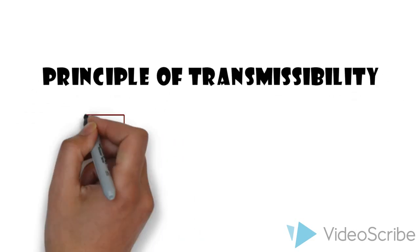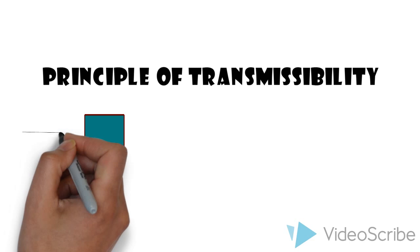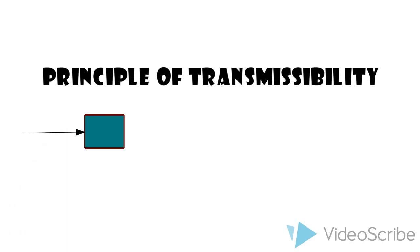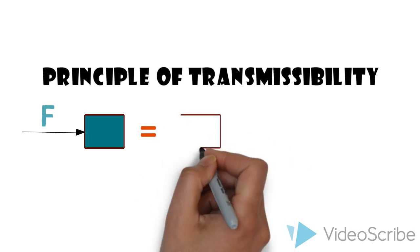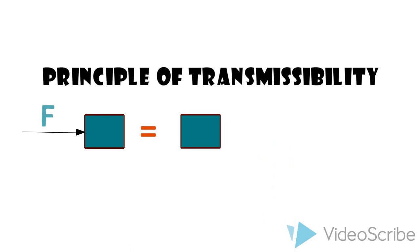Consider a block with a force applied to its left side. Using the Principle of Transmissibility, the pushing force F on the left side is equal to the same force applied at the center of the block.